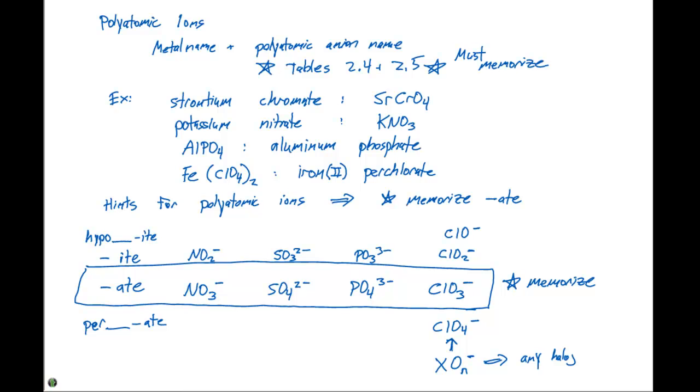So iodate would be IO3 minus, iodite would be IO2 minus. Hypoiodite would be IO minus, and periodate would be IO4 minus.